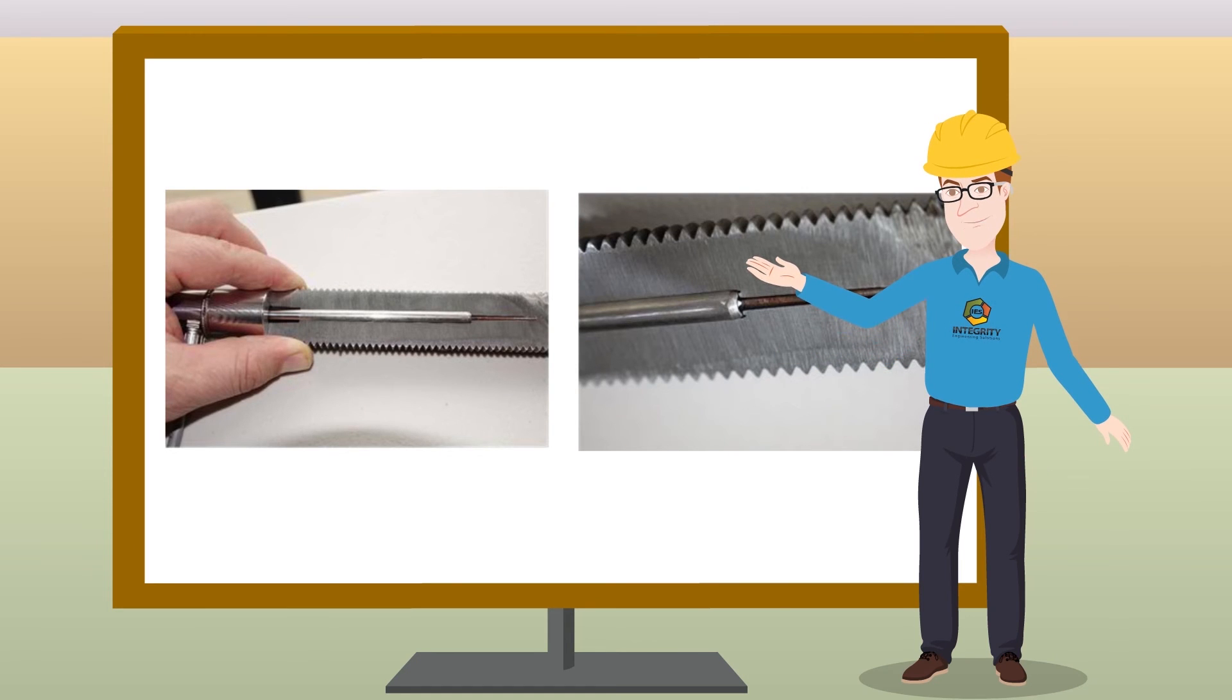In terms of accuracy, the RT Bolt improves on current methods, as the gauge to bolt alignment is achieved via close fit to the bore of bolt, which results in much higher accuracy than conventional methods. The internal datum surfaces are precision prepared using an electrical discharge machining process, which incorporates an automated quality control step.